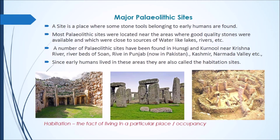Most Paleolithic sites have been found where there is good quality stone and good sources of water like rivers and lakes. A number of Paleolithic sites have been found in places like Hunski and Kurnool near river Krishna, river beds of Son river, Punjab (now in Pakistan), Kashmir, Narmada valley, etc. Since early humans lived in these areas, they are also called habitation sites. Habitation means the fact of living in a particular place.